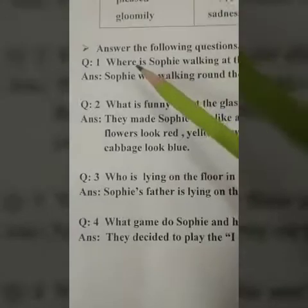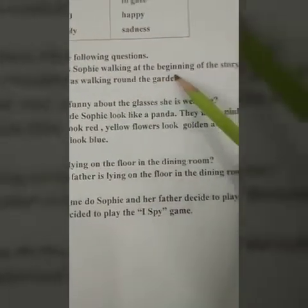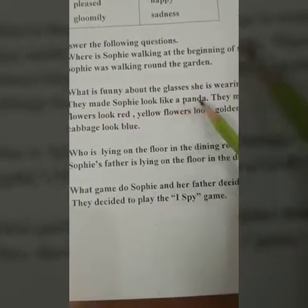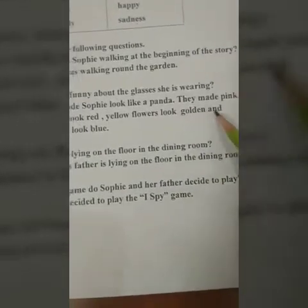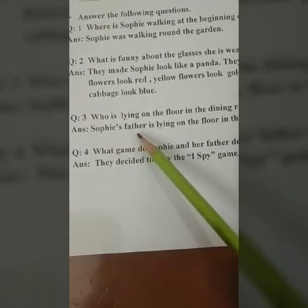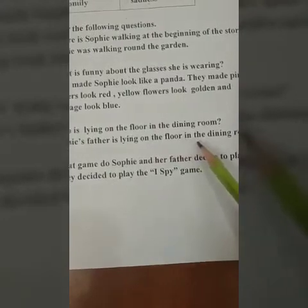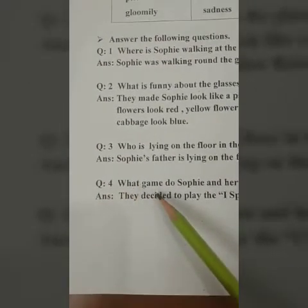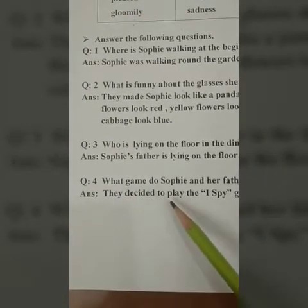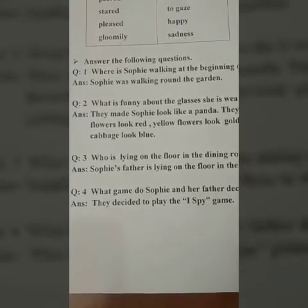Question answers: Question 1 — Where is Sophie walking at the beginning of the story? Sophie was walking round the garden. Question 2 — What is funny about the glasses she is wearing? They made Sophie look like a panda, they made pink flowers look red, yellow flowers look golden, and cabbage look blue. Question 3 — Who is lying on the floor in the dining room? Sophie's father is lying on the floor in the dining room. Question 4 — What game do Sophie and her father decide to play? They decided to play the I-Spy game. Thank you and God bless you all.